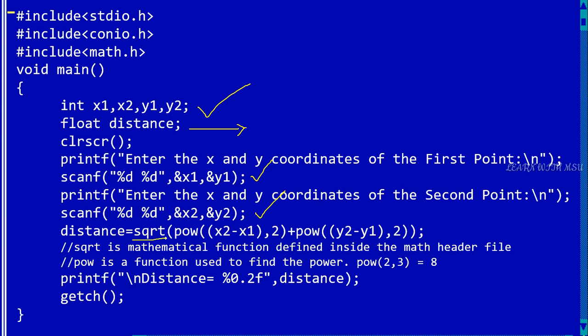Here I am using the mathematical function square root. sqrt is a mathematical function to identify the square root value which is defined inside the math.h header file. And there is another one function also there, that is power of function, so pow.